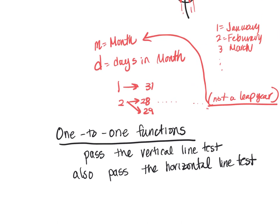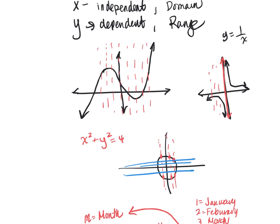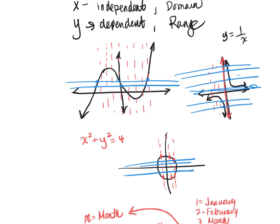If I go back up to these other ones, the circle's not a function but it's also not one-to-one as you can see because it doesn't pass the horizontal line test. These two were both functions. This one is not one-to-one because there's several horizontal lines that have more than one x. This one is one-to-one. There's no way I can touch and have more than one value. So this is a one-to-one function.